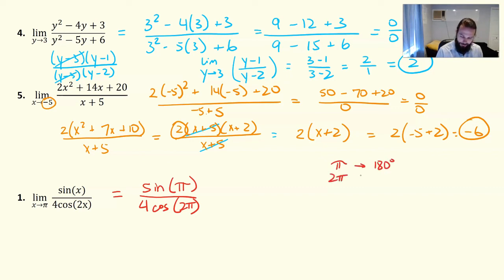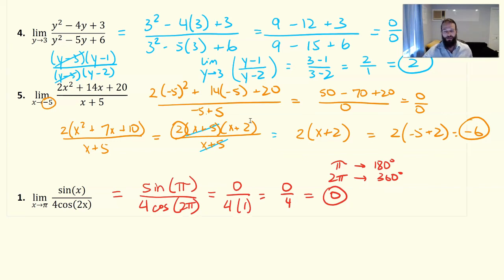2π then is 360 degrees. We're dealing in radians here. The sine of 180 degrees is 0, and the cosine of 360 degrees is 1. So all we've got here is 0 over 4, which is just 0. This is not a number divided by 0. This is just 0 divided by a number. 0 divided by anything is just going to continuously be 0.